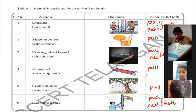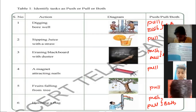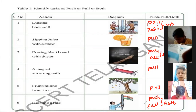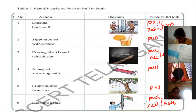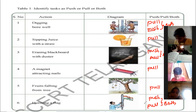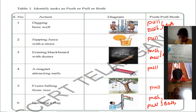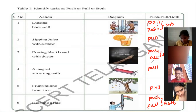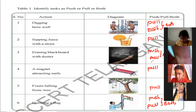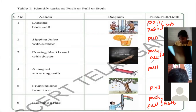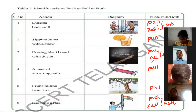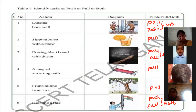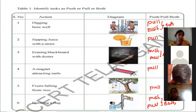Teacher, how is fruit falling from trees a pull? Is this gravitational force or not? Okay, teacher, I understood. So: digging bore well — both push and pull. Sipping juice with a straw — only pull. Erasing blackboard — both push and pull. A magnet attracts nails — pull only. Fruit falling from tree — only pull. Hoisting flag — both push and pull.